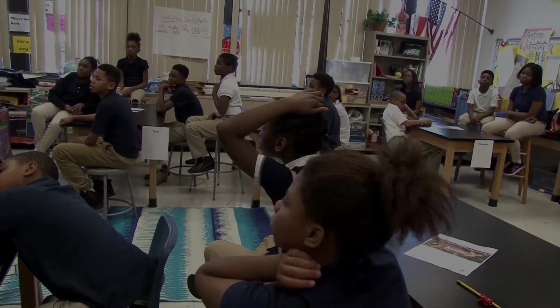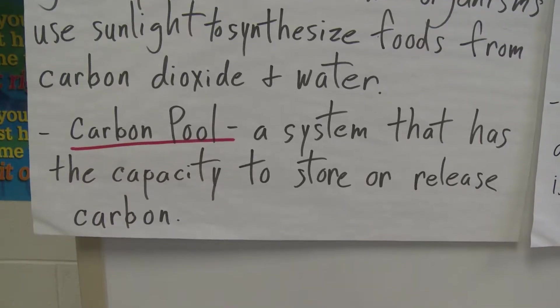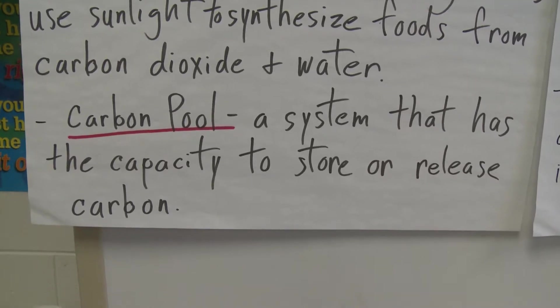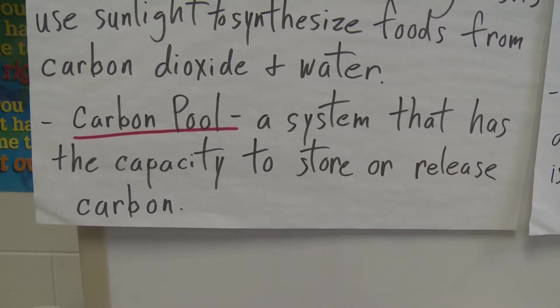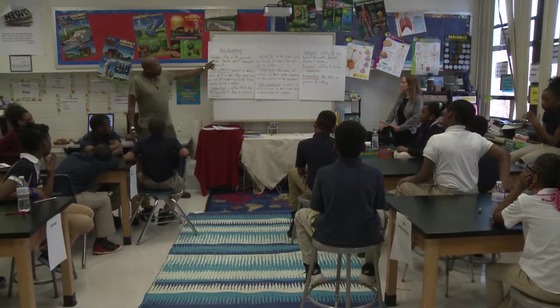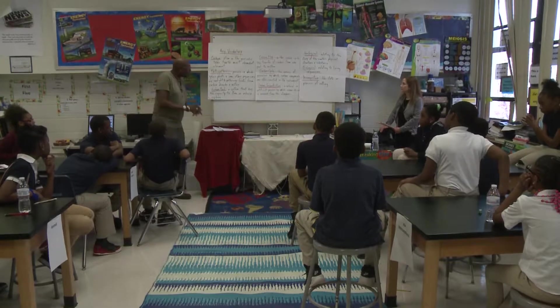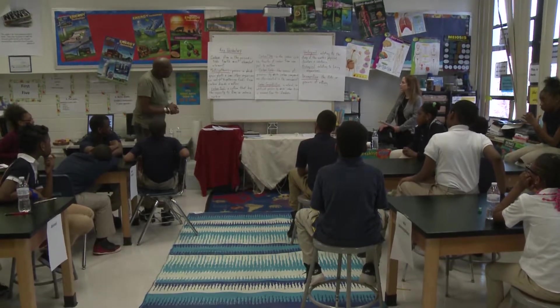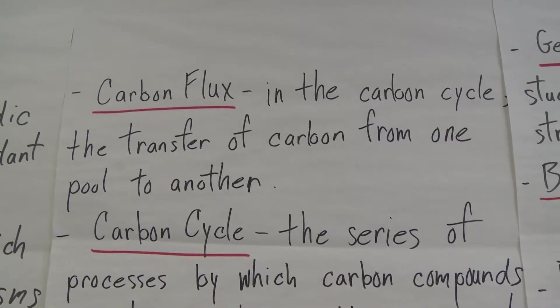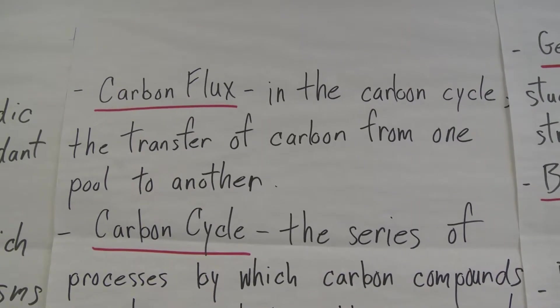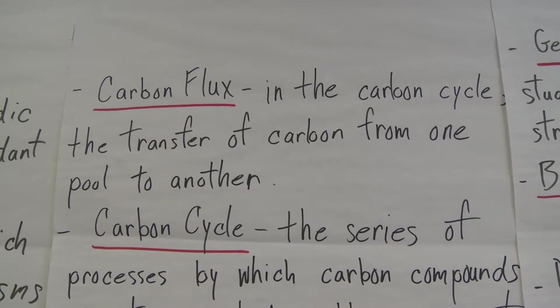A carbon pool is just a system that has the capacity to store or release carbon. Carbon flux — in the carbon cycle, that's the transfer of carbon from one pool to another.